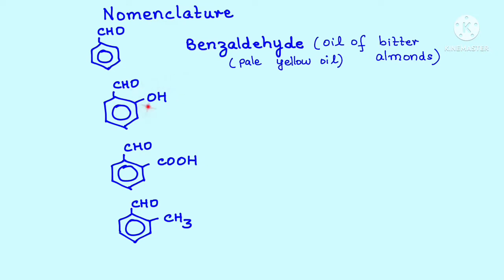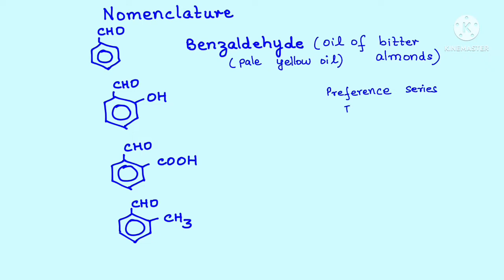If there is any substituent involved, we are going to treat benzaldehyde as the parent compound, and depending on the substituent we are going to write it as a prefix or a suffix. Remember the preference series — the order of naming organic compounds. If you are confused, there is a separate playlist on IUPAC naming of compounds on the channel; go through that to easily recall the preferential series.